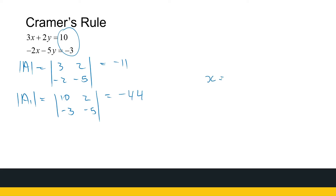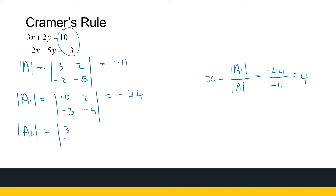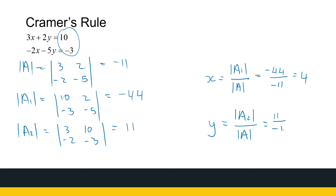So x is the determinant of A1 divided by the determinant of A, which is minus forty-four over minus eleven, giving x equals four. What a quick, easy way to calculate x. Now to calculate y, we find the determinant of A2 by substituting the second column of A with ten and minus three. That determinant is minus nine plus twenty, so it's eleven. So y is the determinant of A2 over the determinant of A, which is eleven over minus eleven, giving y equals minus one. You can substitute those values of x and y in and verify that they satisfy the equations.